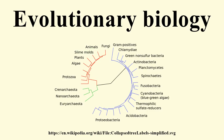Evolutionary biology in a disciplinary sense gained currency during the period of the evolutionary synthesis. Theodosius Dobzhansky and E. B. Ford were important in the establishment of an empirical research program for evolutionary biology, as were theorists Ronald Fisher, Sewall Wright, and J. S. Haldane. Ernst Mayr, George Gaylord Simpson, and G. Ledyard Stebbins were also important discipline builders during the modern synthesis, in the fields of systematics, paleontology, and botany, respectively.